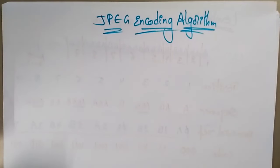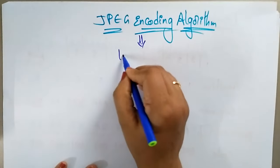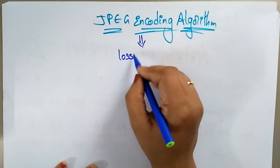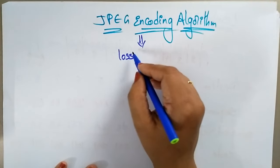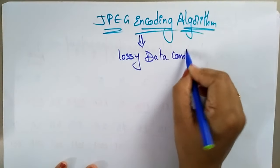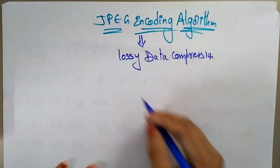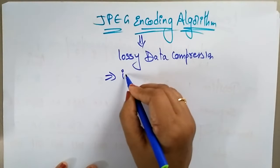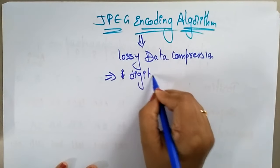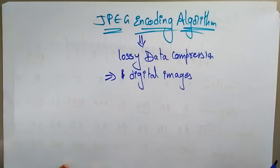Hi students, welcome back. Let's continue with data compression techniques. The next technique is the JPEG encoding algorithm. JPEG encoding is a lossy data compression method. We apply this JPEG encoding algorithm on digital images — for digital image pictures, if you want to compress the files you can use the dot JPEG extension.